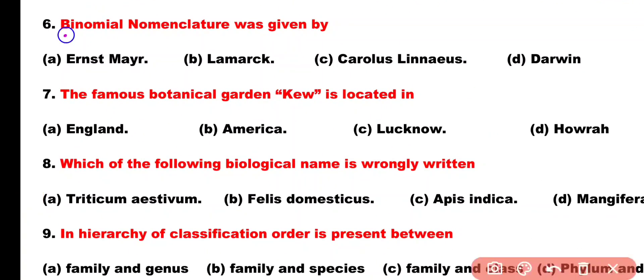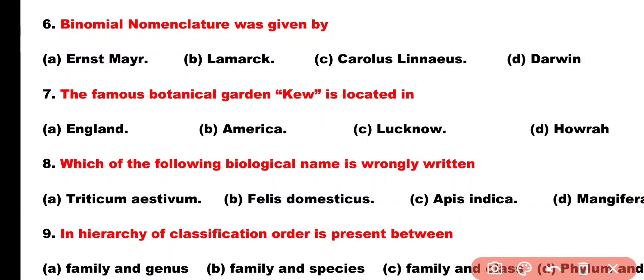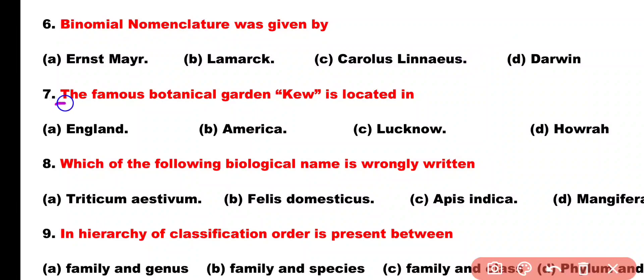Question number 6. Binomial nomenclature was given by: Option A: Ernest Mayr, Option B: Lamarck, Option C: Carolus Linnaeus, Option D: Darwin. Correct answer is Option C. Binomial nomenclature was given by Carolus Linnaeus.